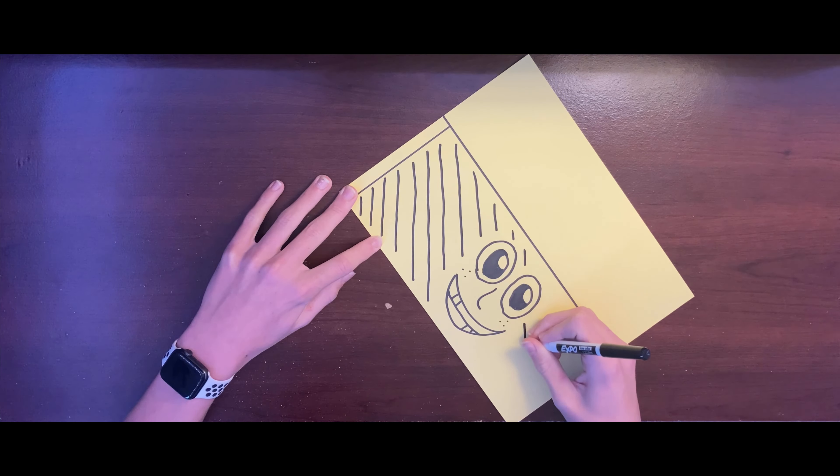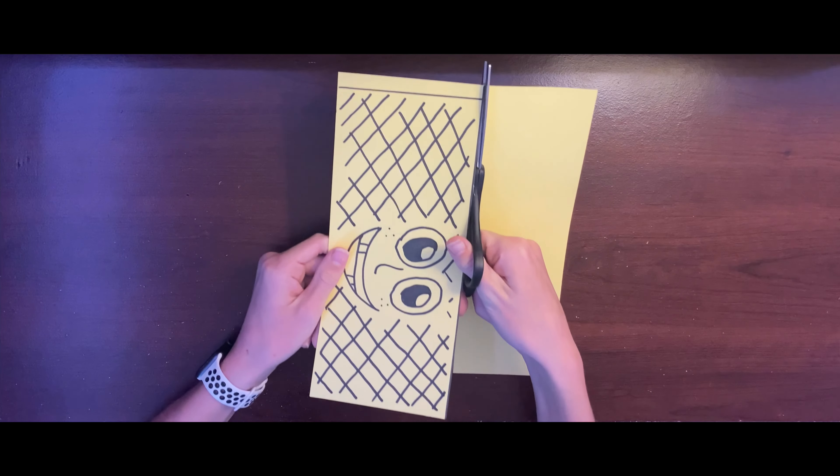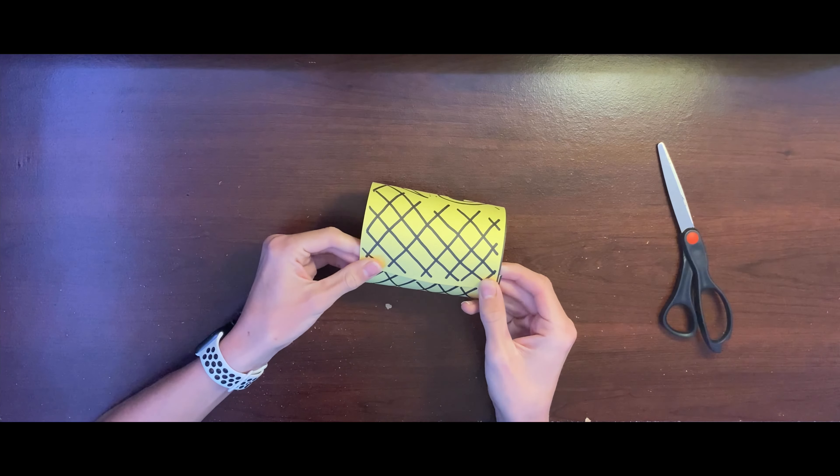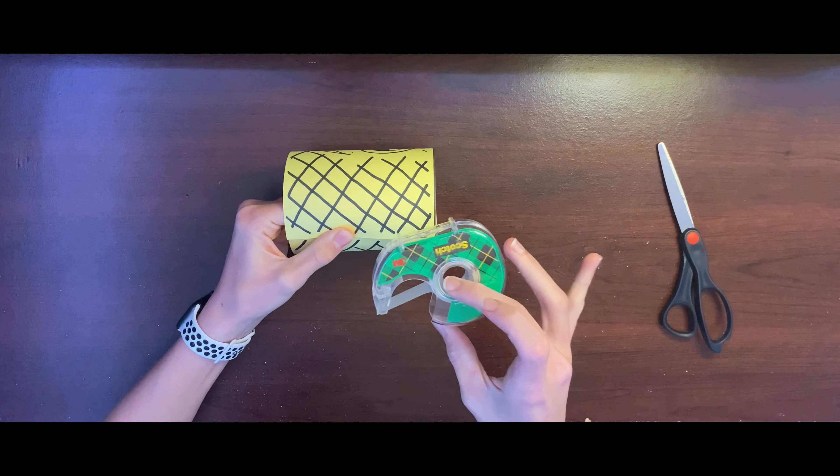Cut out the pineapple head. Flip over the paper and curl it into a cylinder, covering the small blank space we made earlier. Now tape it all together. It should look something like this.